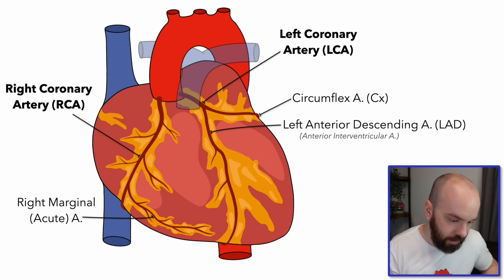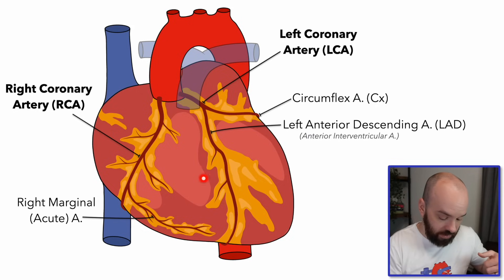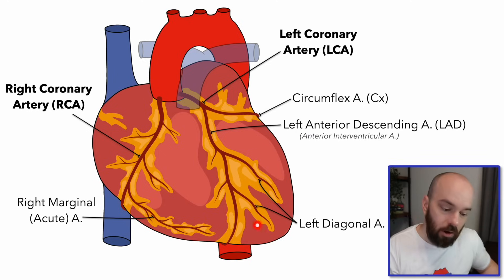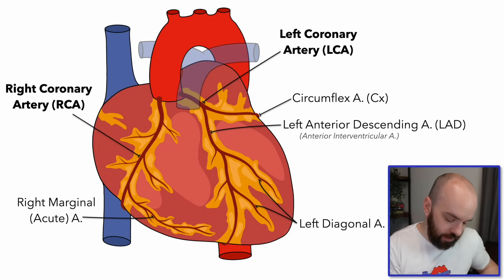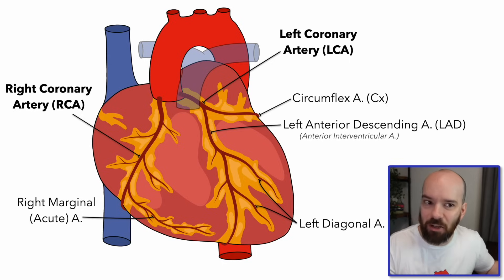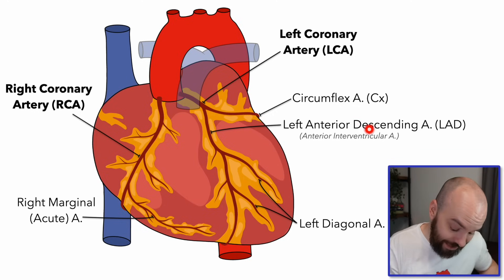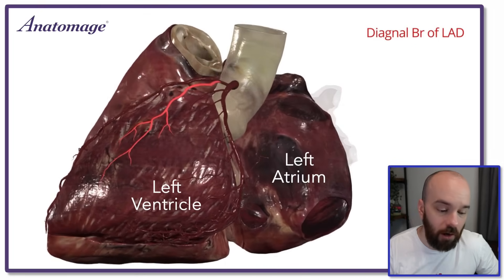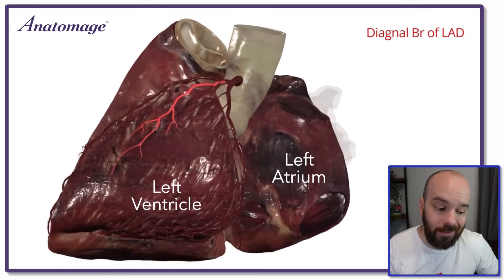Jumping over to the left anterior descending artery, it has a couple of branches called the septal branches. The septum runs through the heart separating the two ventricles, and these branches go down into that septum. There are also a few branches going down to the left ventricle called the diagonal arteries, or left diagonal branches of the LAD — referred to as D1, D2, and so on. A memory tip: left anterior descending starts with "D" for diagonal. Here three-dimensionally we can see the left diagonal arteries branching off the LAD and bringing blood into the left ventricle.